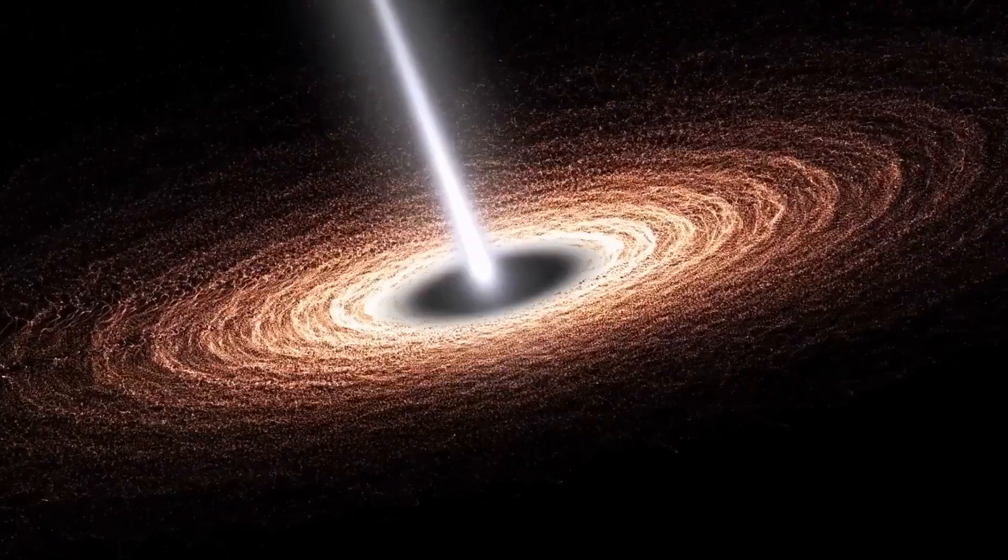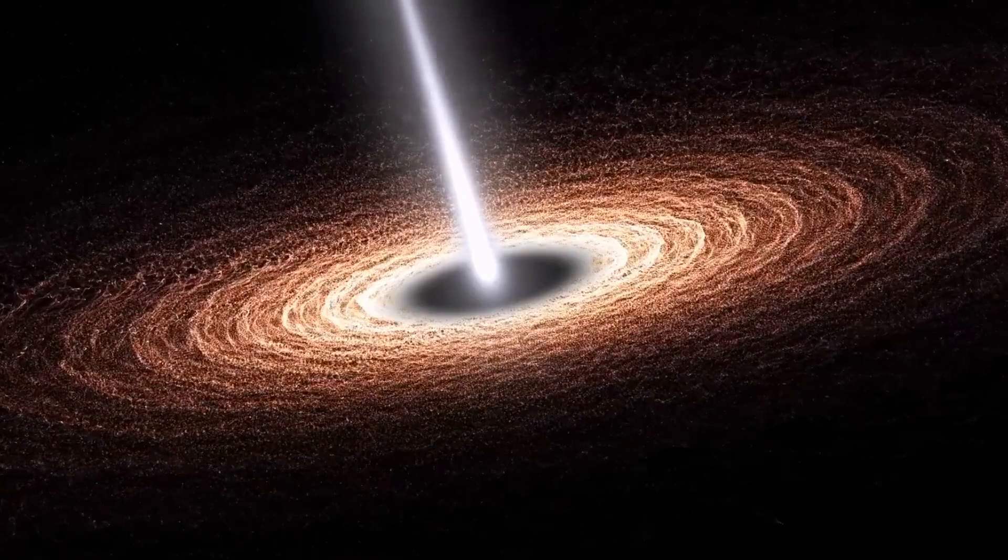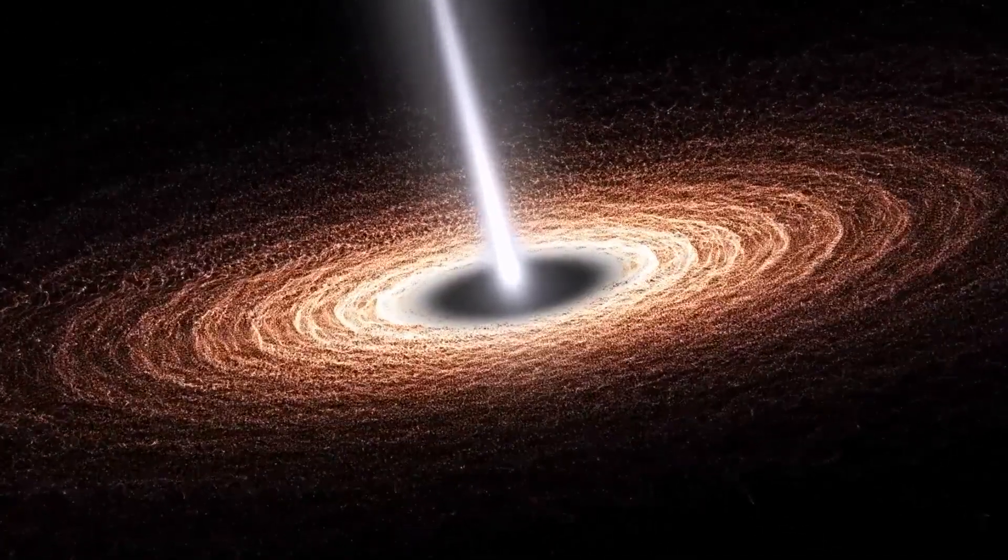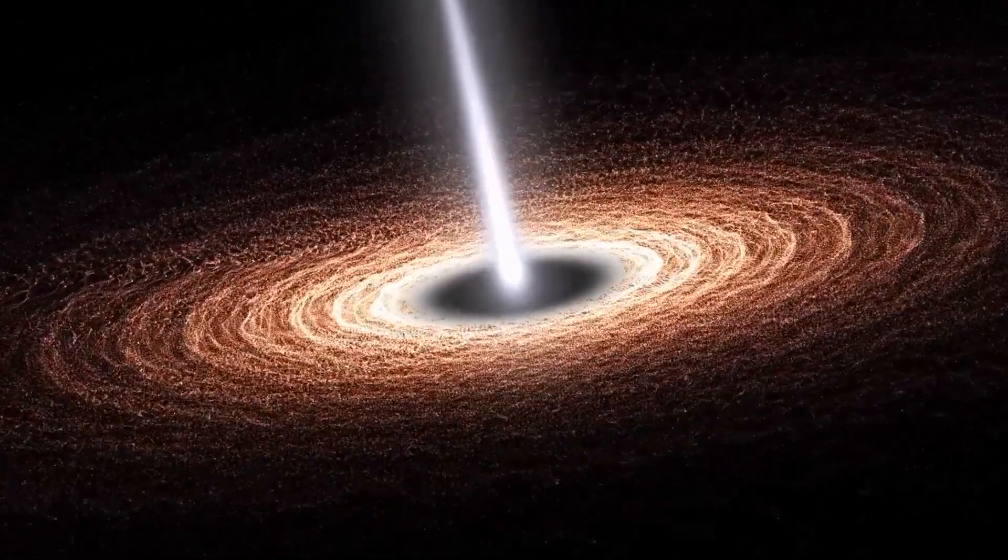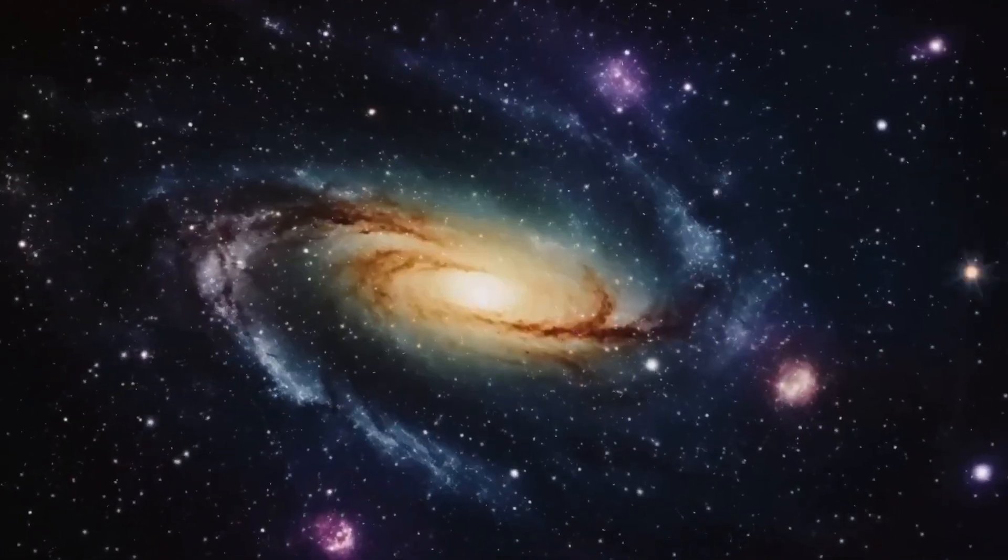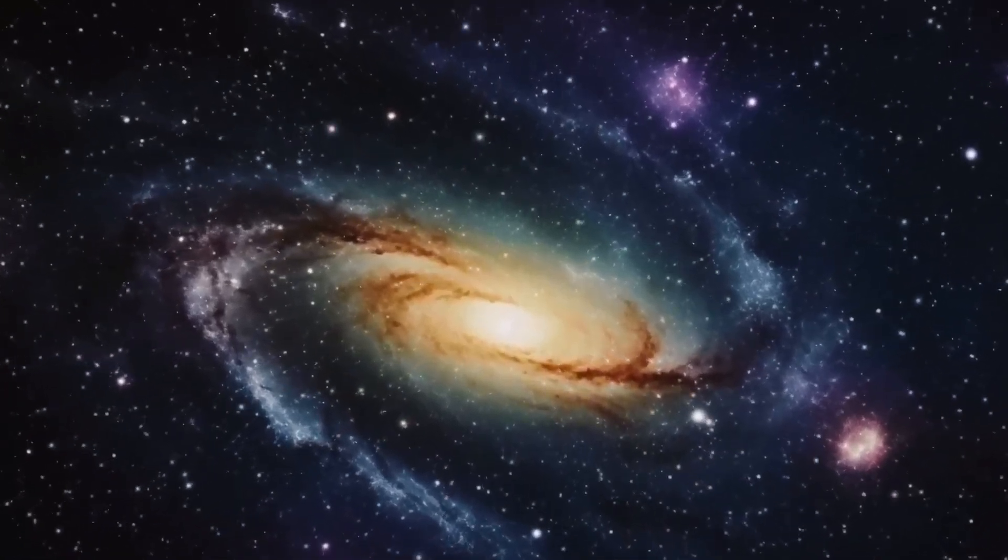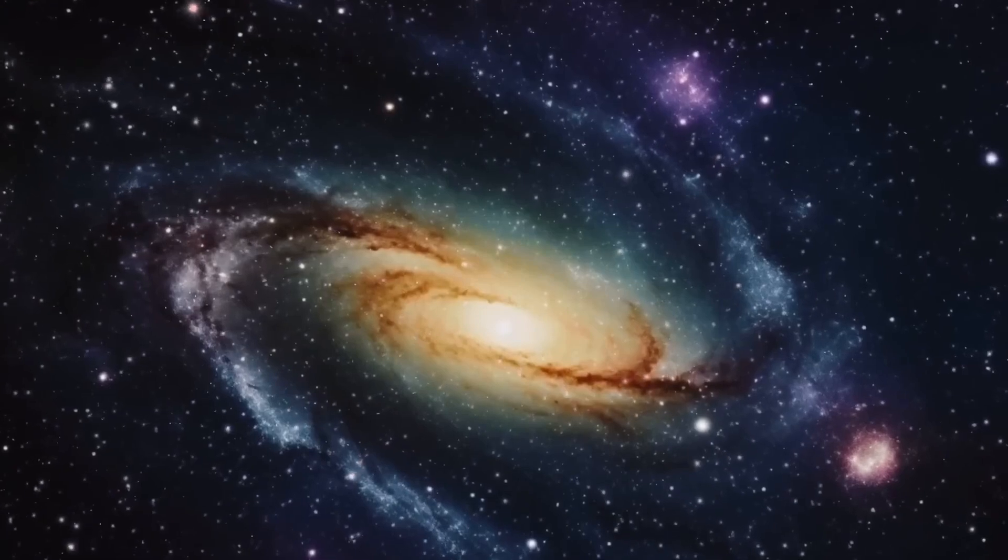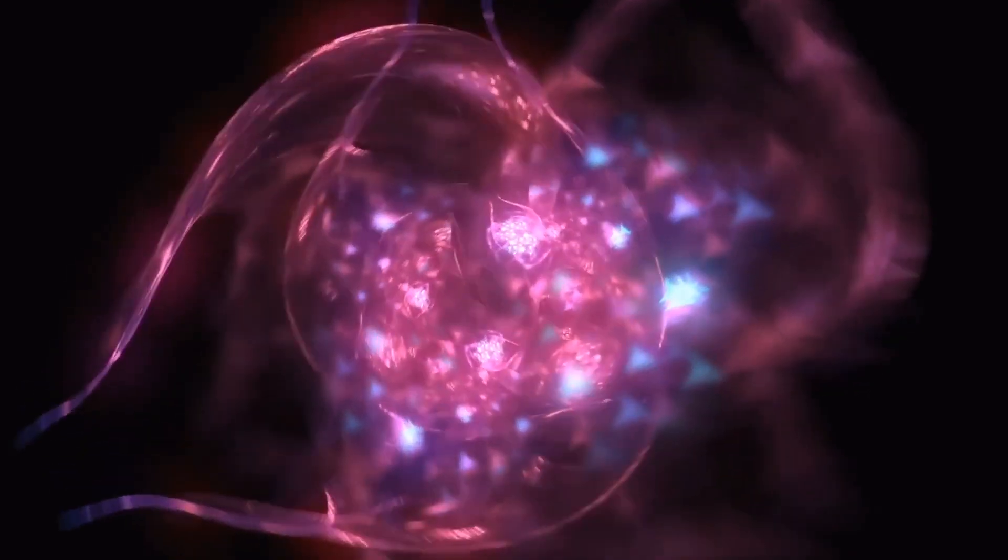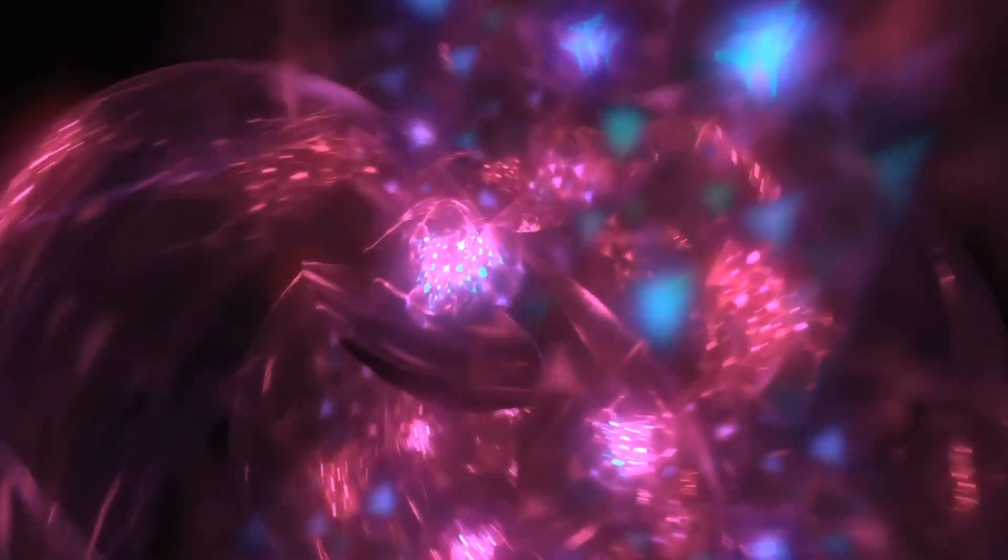If these black holes at the center of galaxies were once dead stars growing huge by sucking in matter or merging with each other, it took millions or billions of years to grow to this size. Consider that the discovered galaxies existed 13.6 billion years ago, and the Big Bang is supposed to have happened 200 million years earlier. You probably realize that the calculation no longer works, and we need to completely revise our knowledge of black holes, star formation, and galactic formation.